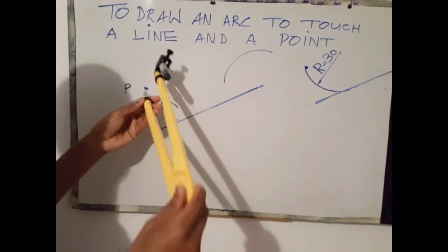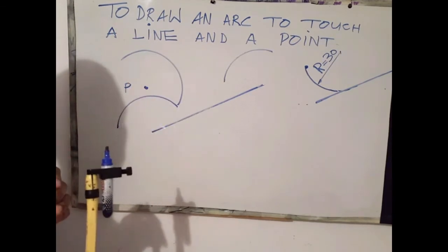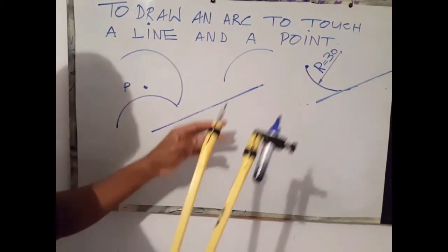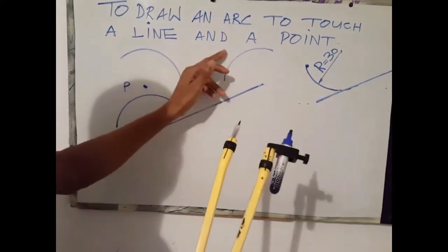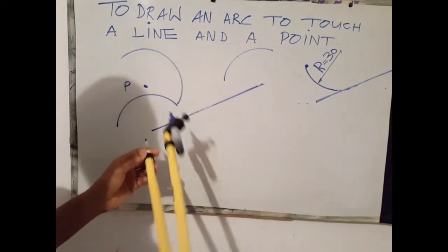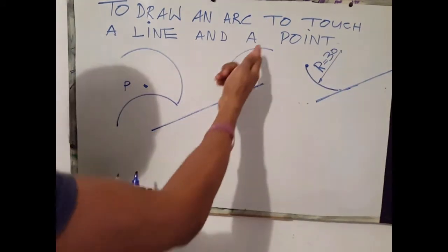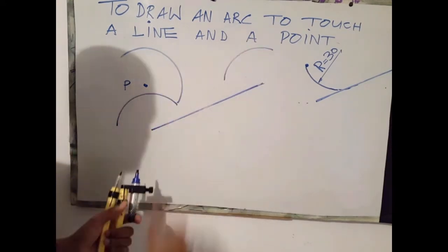Let's recap: this is 30, parallel distance is 30, so I scribe an arc there. Now I'm about to draw the parallel line at the tip of these two arcs.